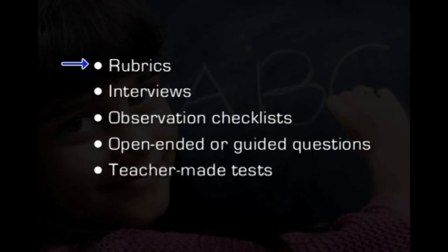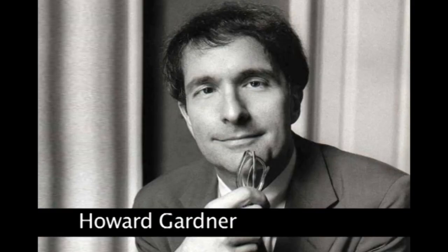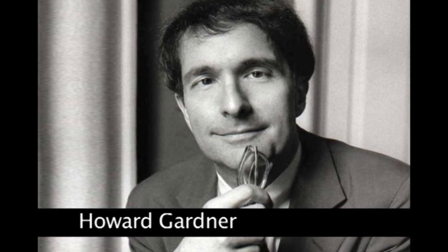When these activities are done, teachers can evaluate their students' level of proficiency by using a variety of tools including rubrics, interviews, observation checklists, open-ended or guided questions, or teacher-made tests. In conclusion, developing a classroom that incorporates the MI theory can take a lot of planning and hard work. However, the effort is worth it because, according to Gardner, we want to educate youngsters so that they can cope successfully with a world that has already changed dramatically and is changing more rapidly still.